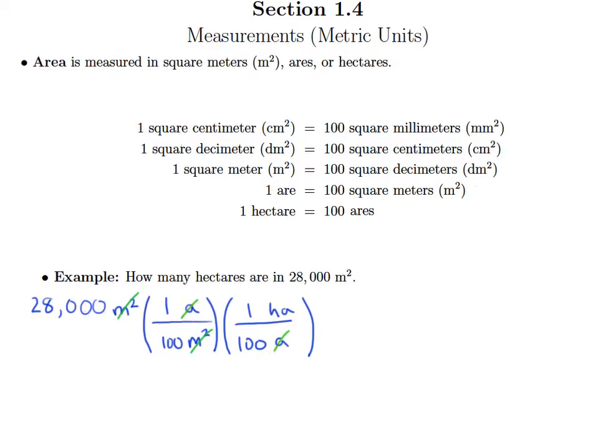We have a situation where we have 28,000 on top. On bottom we have 100 times 100, so that's 1 followed by 4 zeros. Since there are three zeros on top, I can cancel that with three of the zeros on bottom. That leads me to just 28 divided by 10.